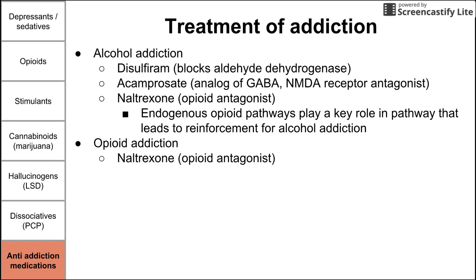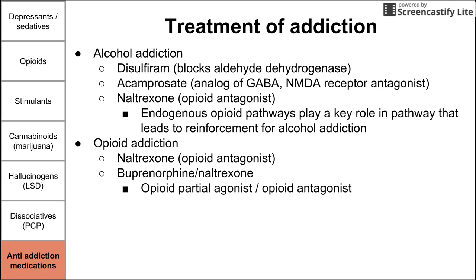For opioid addiction, we again see naltrexone, an opioid antagonist that can help people overcome dependence. There's also a combination drug of buprenorphine and naltrexone — a combination of an opioid partial agonist and an opioid antagonist — administered sublingually as a tablet placed under the tongue. It's brilliantly designed: swallowing the pill gives no good effect, and crushing and injecting it triggers the opioid antagonist effect, making withdrawal symptoms worse. So it must be administered sublingually to work, preventing abuse.